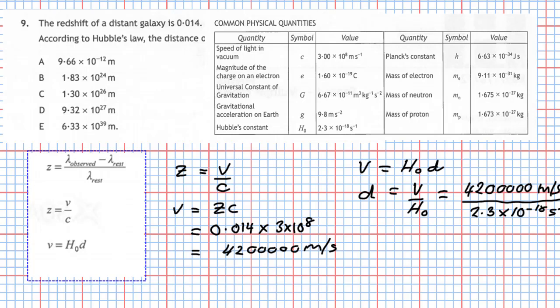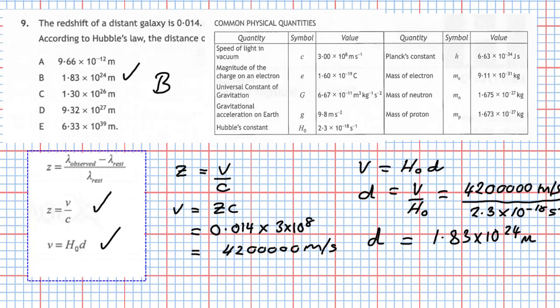The seconds units cancel out, and doing that calculation on the calculator gives the distance d as 1.83 × 10²⁴ metres. Checking the answer options, that corresponds to answer B. This question requires using two of the redshift equations — z = v/c and v = H₀d — working through one to get the answer needed for the next.